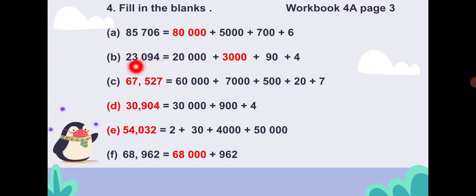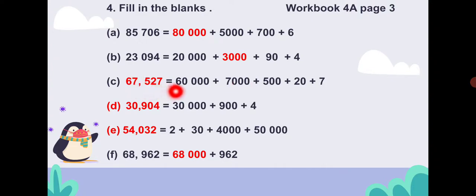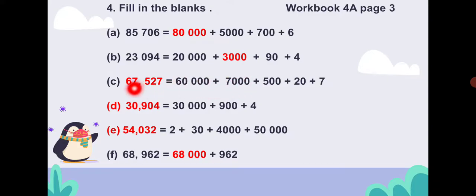Next, two stands for twenty thousand. Then three is on the thousands place, so three stands for three thousand. Now the full number in expanded form — if you have sixty thousand plus seven thousand plus five hundred plus twenty plus seven, that means sixty-seven thousand five hundred and twenty-seven.